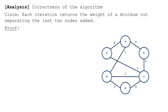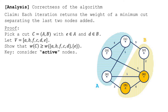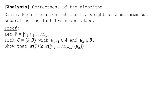It remains to prove the claim. The cut returned by the first iteration has E on one side and all other vertices on the other. We want to show that the cut returned is the minimum among all cuts separating the last two nodes added. Take a cut C which separates D and E. The key is to consider the active nodes. An active node is in a different part of the cut than the node added before it. B is an active node, F is an active node, D is not an active node. The active nodes of this iteration are highlighted in gray. Note that the last node must be active.